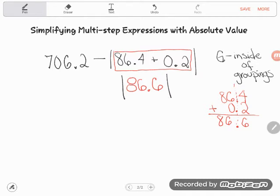So you can see that I got that 86.6 from that red box there, but I haven't done the absolute value yet, I haven't done the subtraction yet, and I haven't touched the 706.2. So I'm just going to drop it to the next line and then consider what to do next.